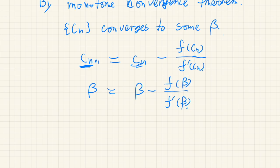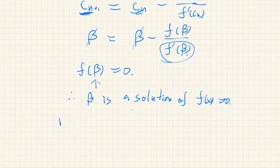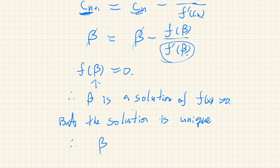That means f of beta over f prime of beta equals 0. Multiplying both sides by f prime of beta, which is positive, gives f of beta equal to 0. So beta is a solution of f of x equal to 0. But as we discussed, the solution is unique, and therefore beta must equal alpha. So the limit of the sequence is alpha, which is the solution of the equation, and we are done.